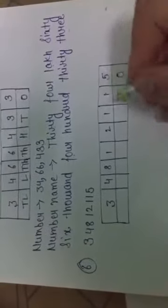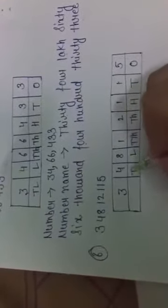Write down the place value: five is in the one's place, one is in the ten's place, one is in the hundred's place, two in the thousand's place, one in the ten thousand's place, eight in the lakh's place, four in the ten lakh's place, and three in the crore's place.